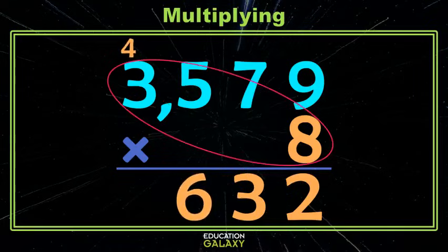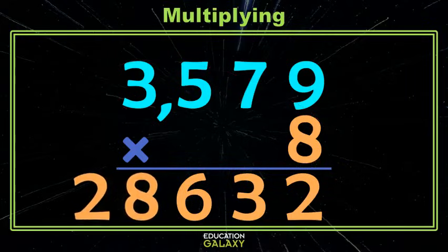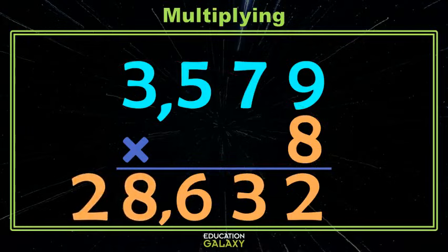Lastly, we multiply 3 times 8, which is 24. Don't forget the 4 you carried. Add that in and we're pretty much done except for our pretty little comma. Not so bad, right?